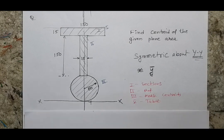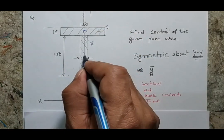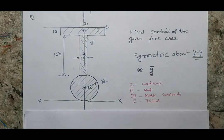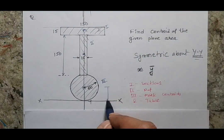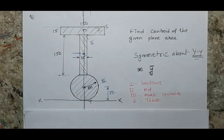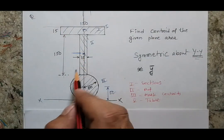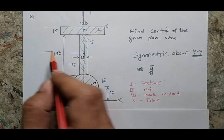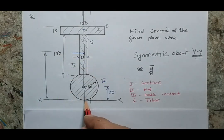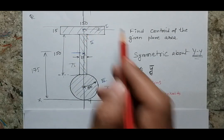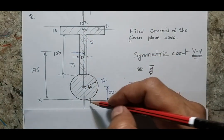Now my third job is to mark the individual centroid positions. The first centroid will be here, the second centroid here, and the third centroid here. The position of the first centroid is 50. For the second centroid, the total distance given is 150, so half is 75 and the remaining is 100, giving a centroid position of 100 plus 150 divided by 2, which is 175.